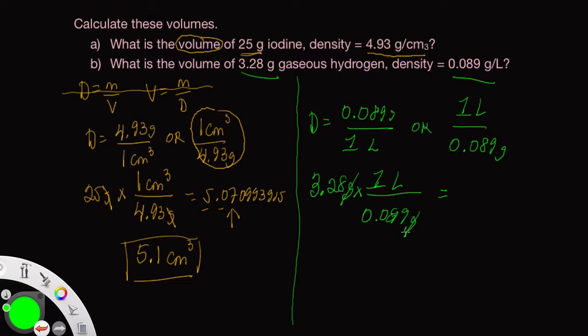Let's punch this in on our calculator and see what we get. 3.28 divided by 0.089. And I get 36.85393258 on my calculator.